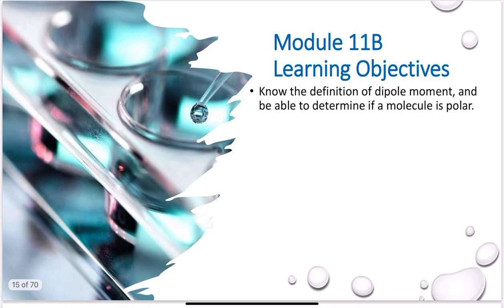In this section, I want to talk about polar molecules. We've talked about polar bonds. In chapter 10, we learned about electronegativity, and we discussed how electronegativity leads us to identifying if a bond is polar or not.